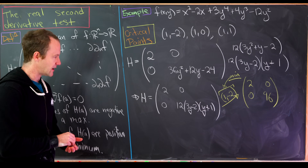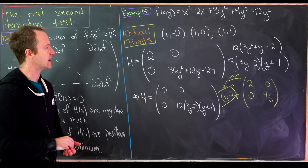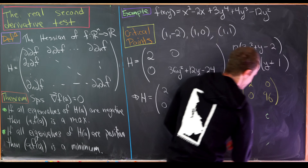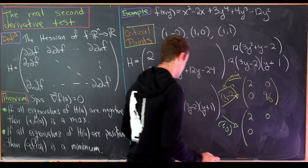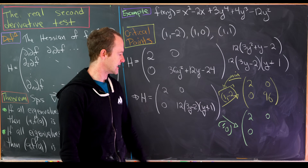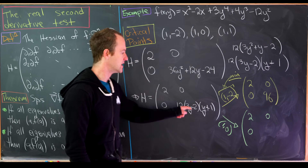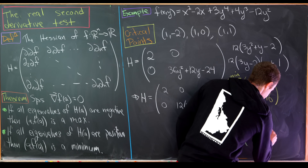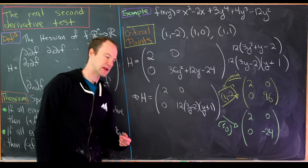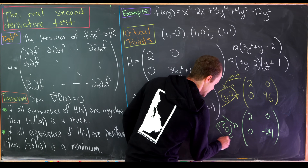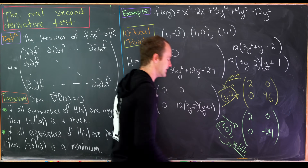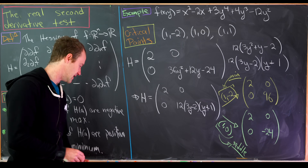Next, evaluating at (1, 0): plugging y = 0 into 12(3(0) − 2)(0 + 1) = 12(−2)(1) = −24. The matrix is diag(2, −24), which has eigenvalue −24, which is negative. Since one eigenvalue is positive and one is negative, this is a saddle point — neither a maximum nor a minimum.